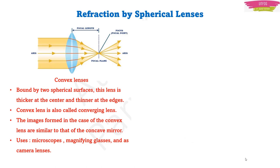A convex lens is made by joining two spherical surfaces together — it is thicker in the middle and thinner at the edges. This convex lens is also called a converging lens. The images formed by a convex lens are the same as those formed by a concave mirror. Because of its converging property, convex lenses are used in microscopes, magnifying glasses, and camera lenses.